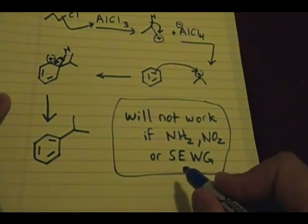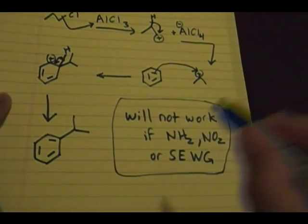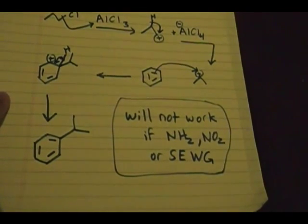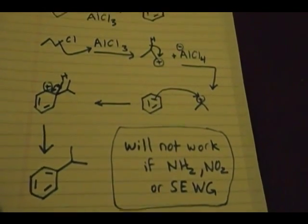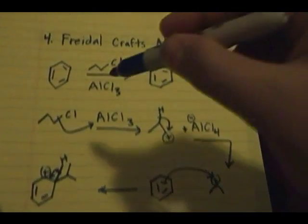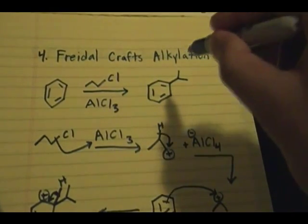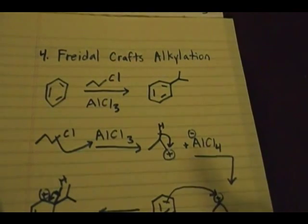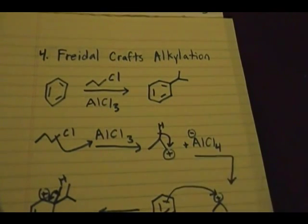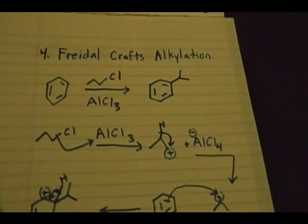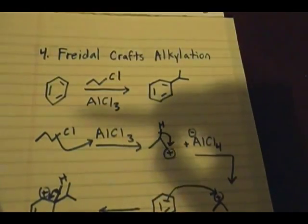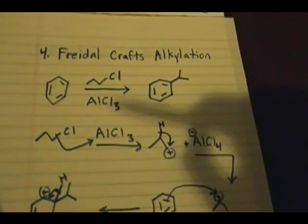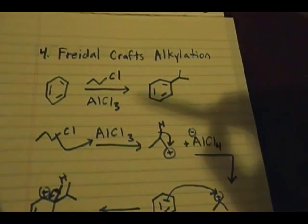This applies to the Friedel-Crafts acylation also. To repeat: the Friedel-Crafts alkylation and Friedel-Crafts acylation will not work if your aromatic ring — the starting material — has an NH2, NO2, or a strong electron withdrawing group present on it.